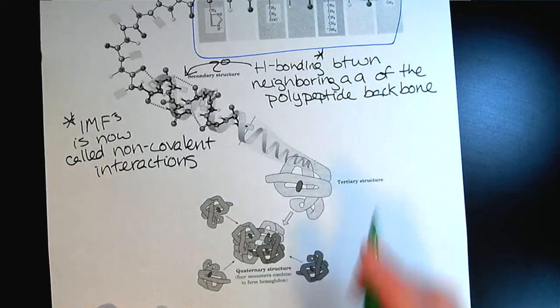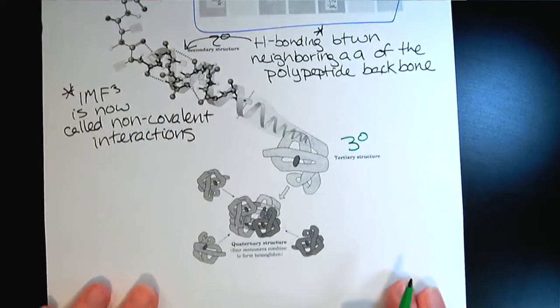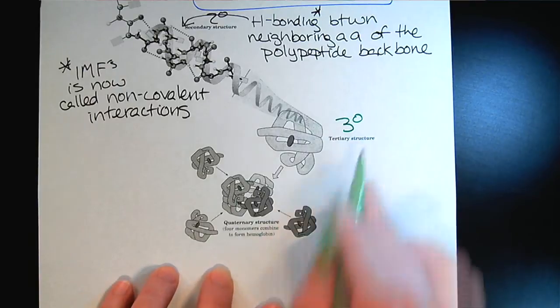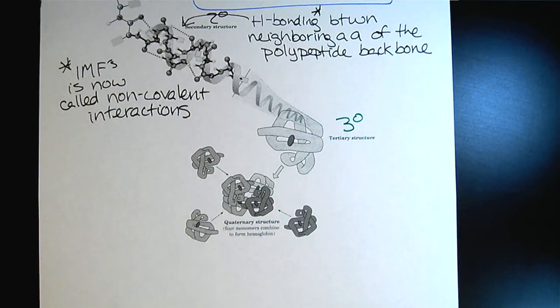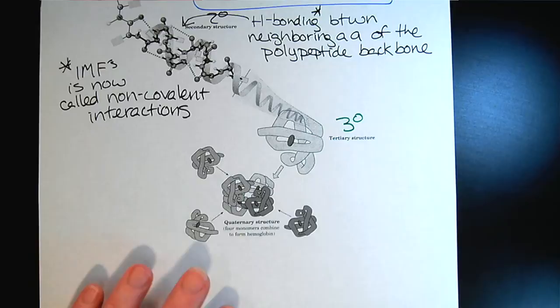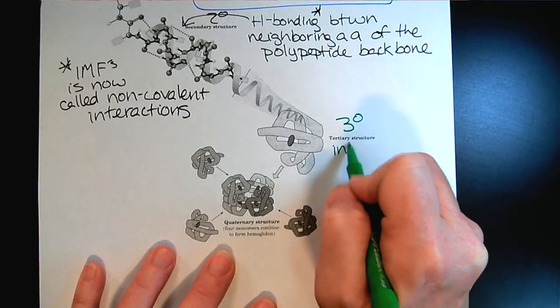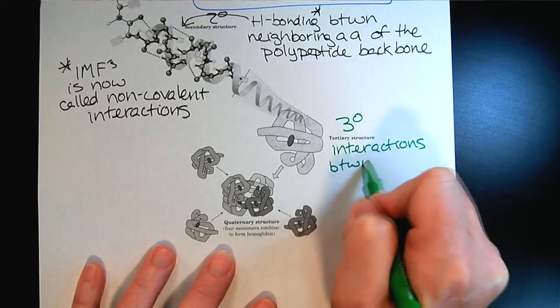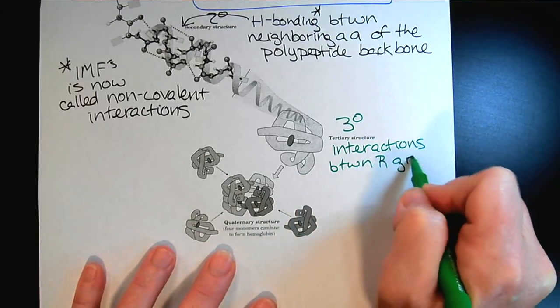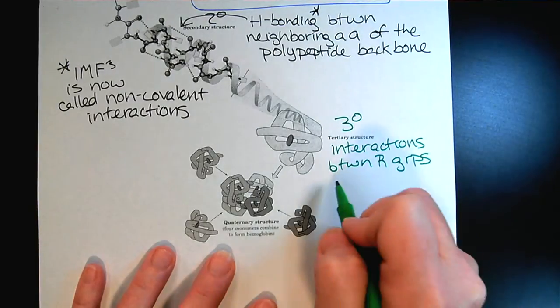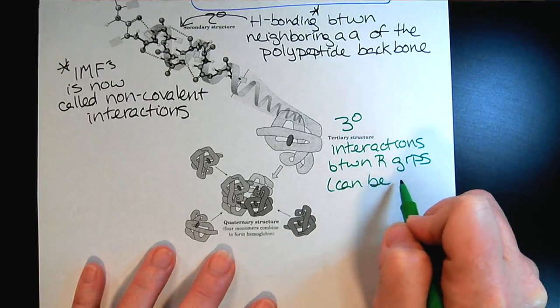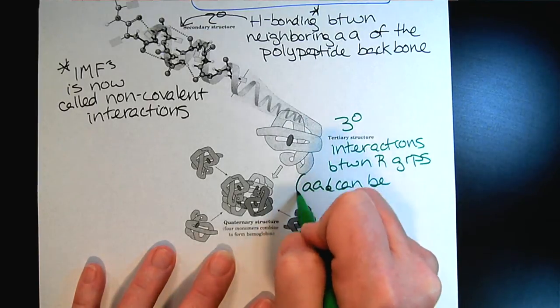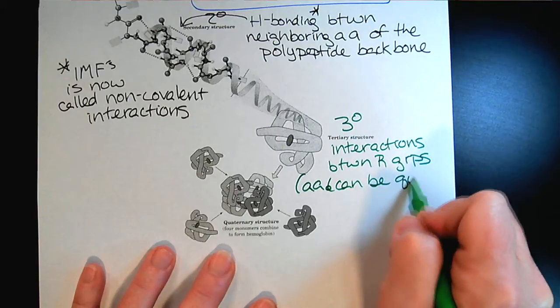Then we get to our tertiary structure. The tertiary structure is really about the R groups that come off of the amino acids. These interactions can be quite far apart. When we think about tertiary structure, we're thinking about interactions between the R groups of the amino acids, and the amino acids can be quite far apart.